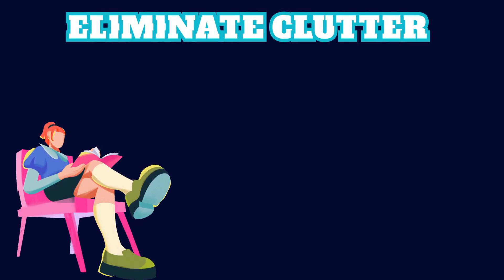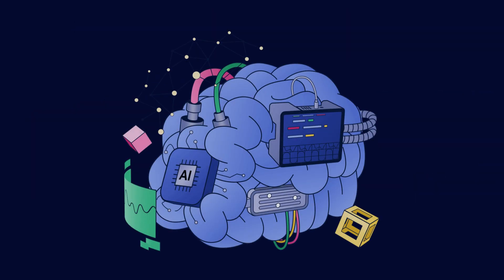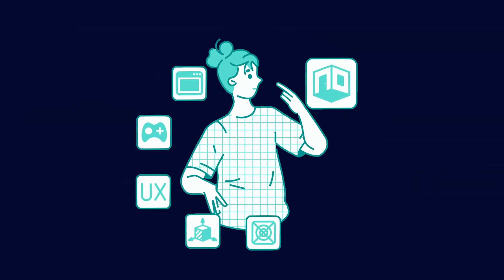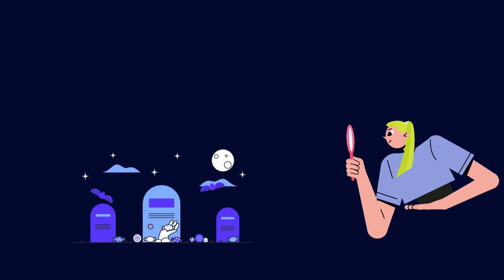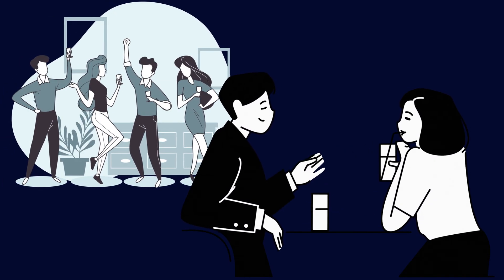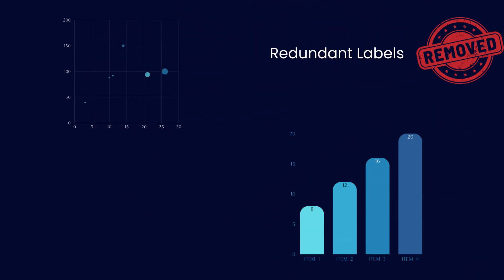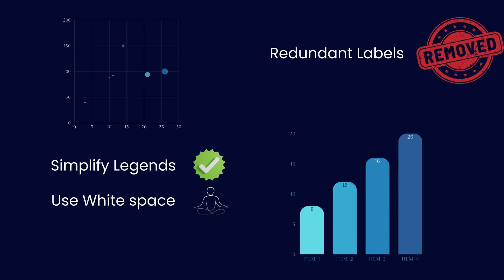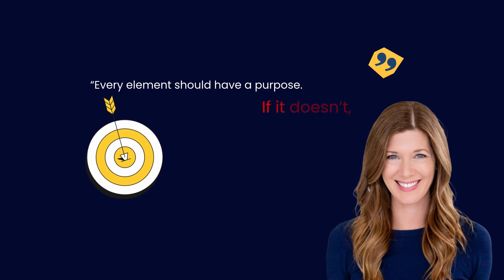Number three: eliminate clutter. This might be Cole's biggest lesson — clarity beats complexity. Our brains process visuals instantly, but only when they're clean. Too much text, too many colors, too many borders, and the message dies in the noise. She calls clutter 'visual junk' — like background noise in a conversation. So strip away everything that doesn't add meaning: remove redundant labels, simplify legends, use whitespace to breathe, reduce color variety. Cole puts it simply: every element should have a purpose. If it doesn't, delete it.